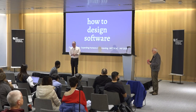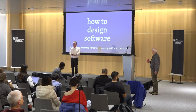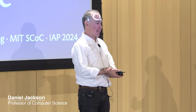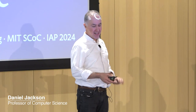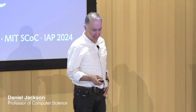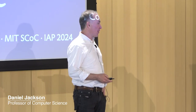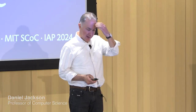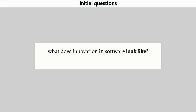My name is Daniel Jackson. I'm a professor in EECS and a researcher in CSAIL. I'm going to talk about how to design software. Here are the two questions I'm going to start with: first, what does innovation in software look like? And secondly, what makes a software product successful?